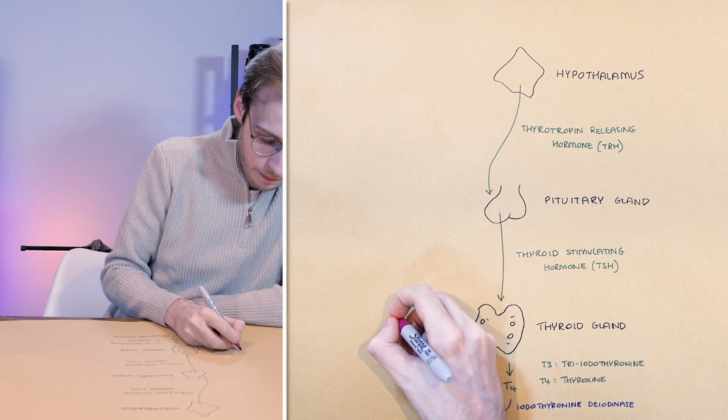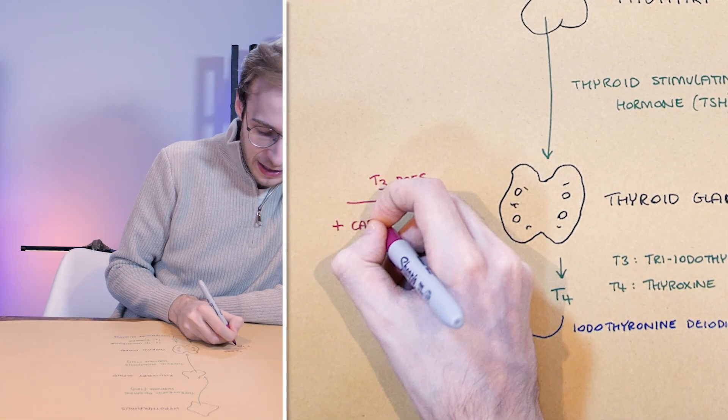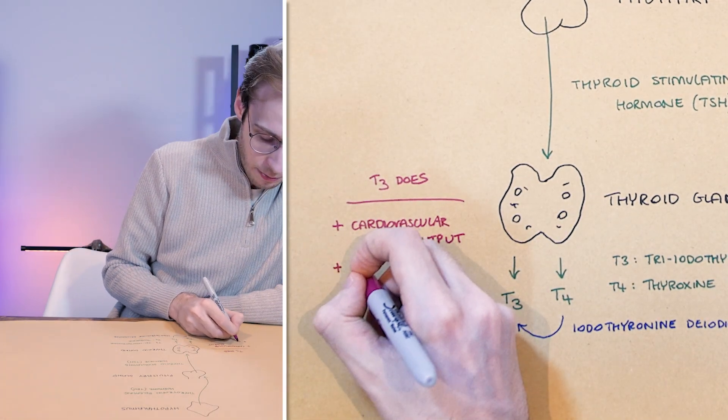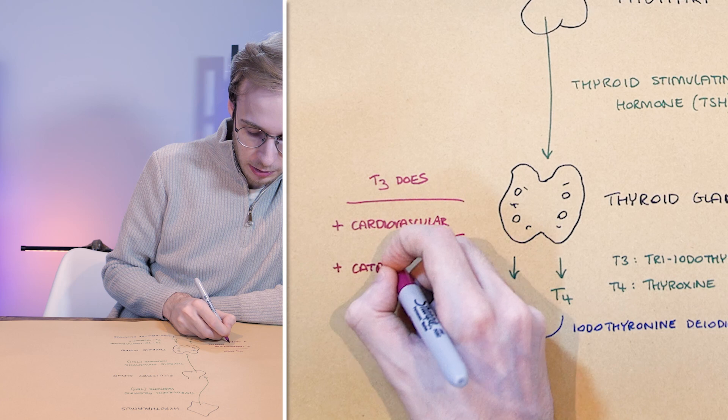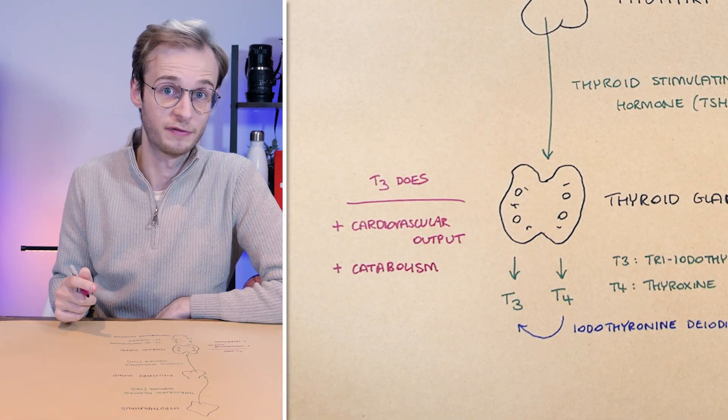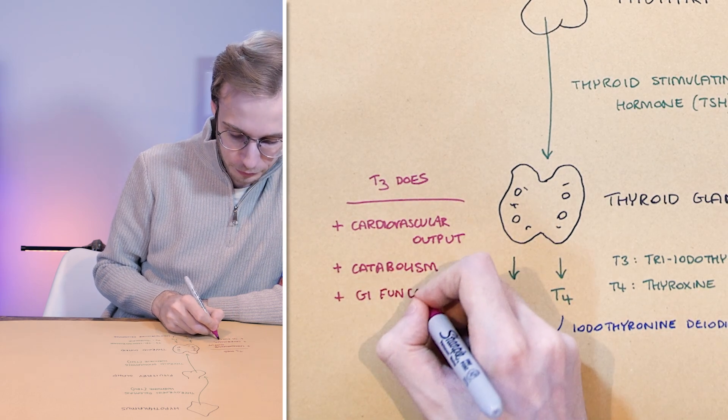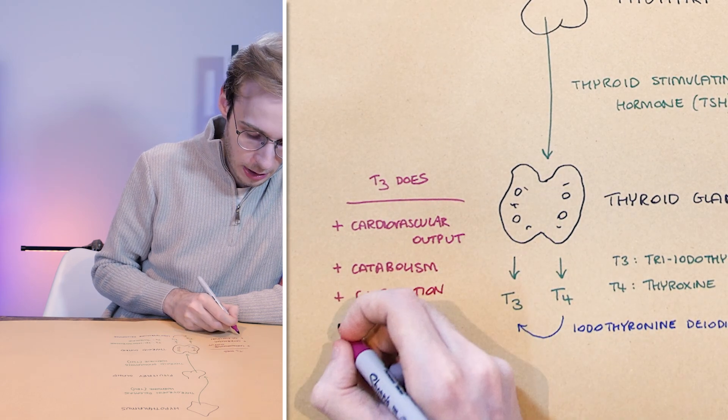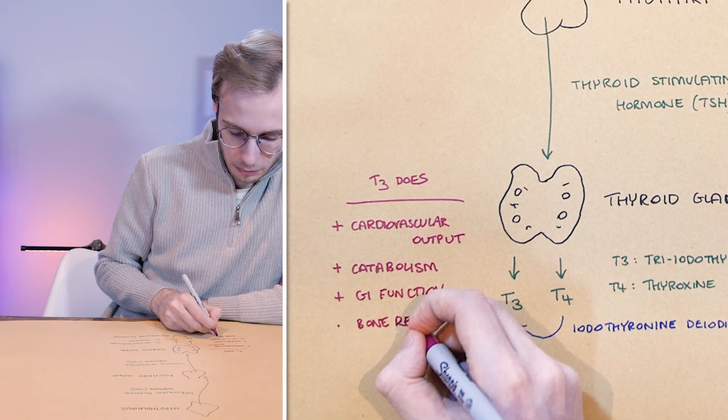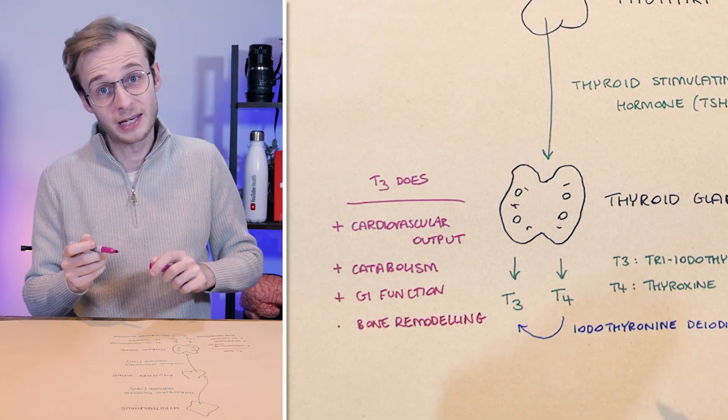So now we've got our T4 and T3 circulating around. What does T3 do? There are some really key functions of T3. It increases cardiovascular output. It increases catabolism, that is breakdown of large molecules into smaller ones. So it will help with breakdown of starches, proteins to provide energy. It increases your gastrointestinal function. And it also contributes to bone remodeling, among many other things.